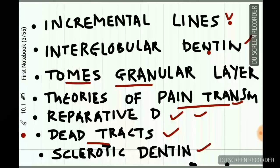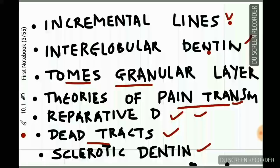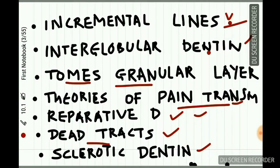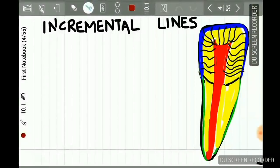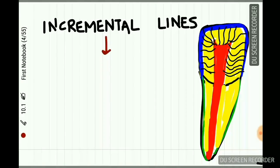In today's lecture we will be studying about the incremental lines of dentine, the interglobular dentine, the Tomes granular layer, various theories of pain transmission, reparative dentine, dead tracts, and sclerotic dentine. Dentine is deposited on a daily basis in a rhythmic pattern, and this rhythmic deposition is represented by incremental lines called the incremental lines of von Ebner.